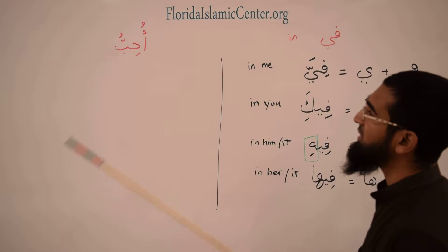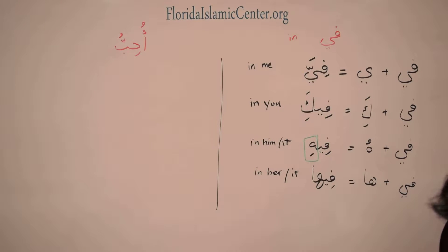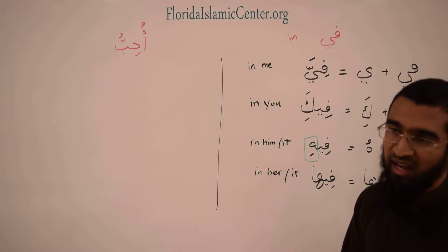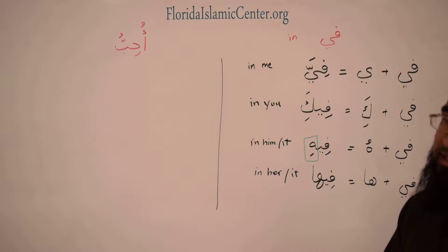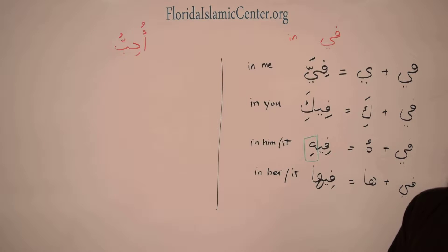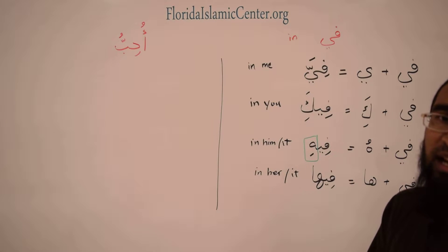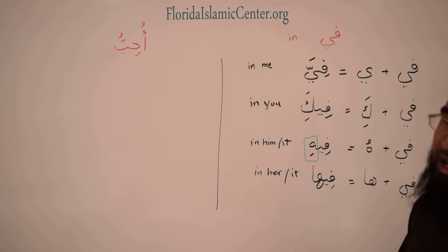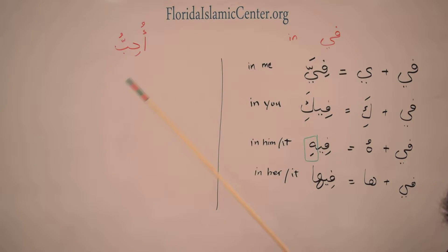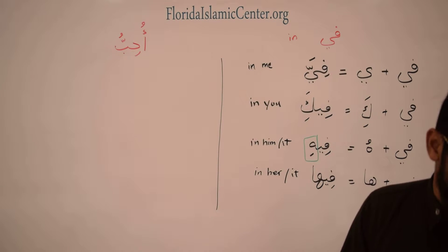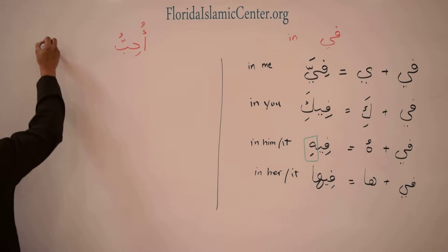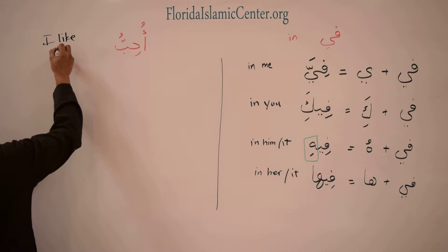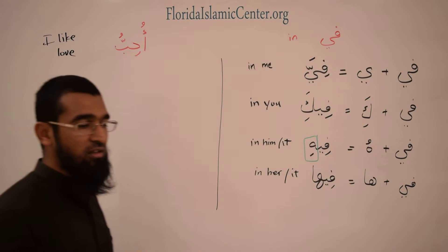The second concept is أحب. أحب is actually a verb — a fi'al. Verbs, as we mentioned before, can be in different tenses: the past tense, the present tense, and the أمر — the command form. أحب is in the present tense and means 'I like' or 'I love,' depending on the context.